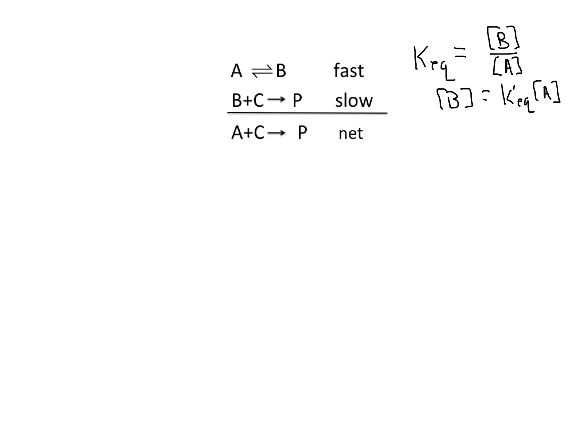The overall rate of reaction is how fast the product appears in time which is equal to K2 times B times C. Substituting in for my expression for B, I have K2 times the equilibrium constant times A times C.